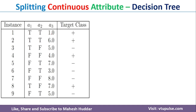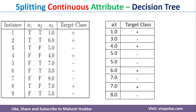So first, we need to find how to get the split points. Based on that particular split point, we need to find the entropy and information gain. And based on that information gain, we need to select the best split point. So I will concentrate only on A3 here.